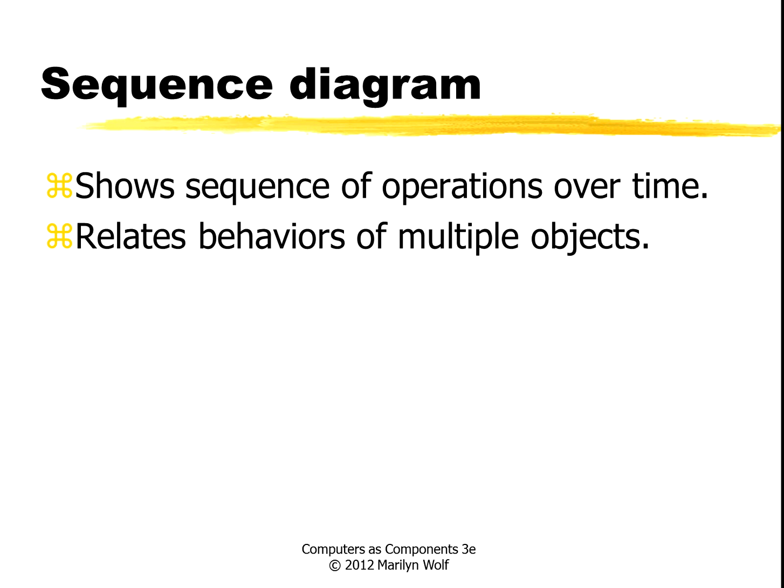So another important type of diagram in UML is a sequence diagram. It shows a sequence of operations over time, and it allows us to relate the behavior of multiple objects. This is a little bit like a timing diagram in hardware, but we usually don't have a very detailed notion of time. We have more of a notion of the order in which things happen.